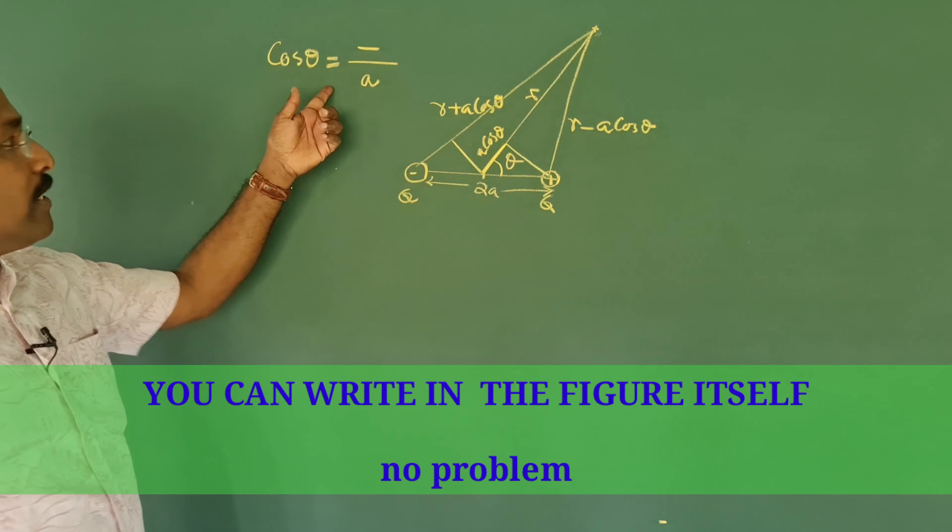Is there any other zero-potential line? Any plane that is perpendicular to the axial line and passes through the center of the dipole is a zero-potential plane. There is only one such plane, and it is an equipotential plane with potential equal to zero volts.